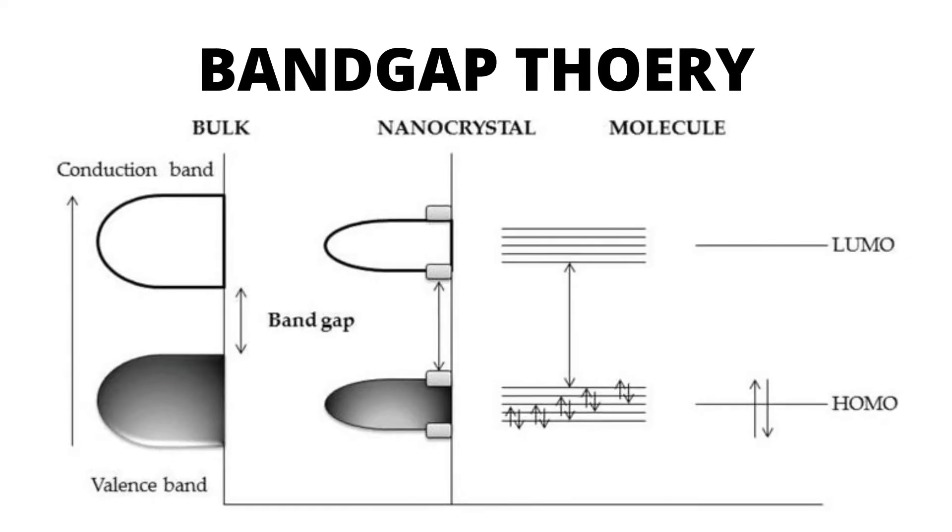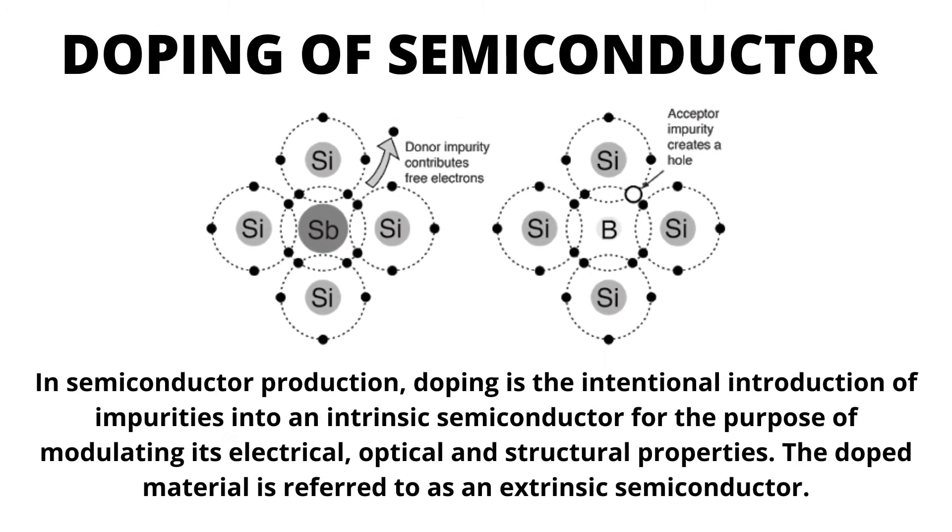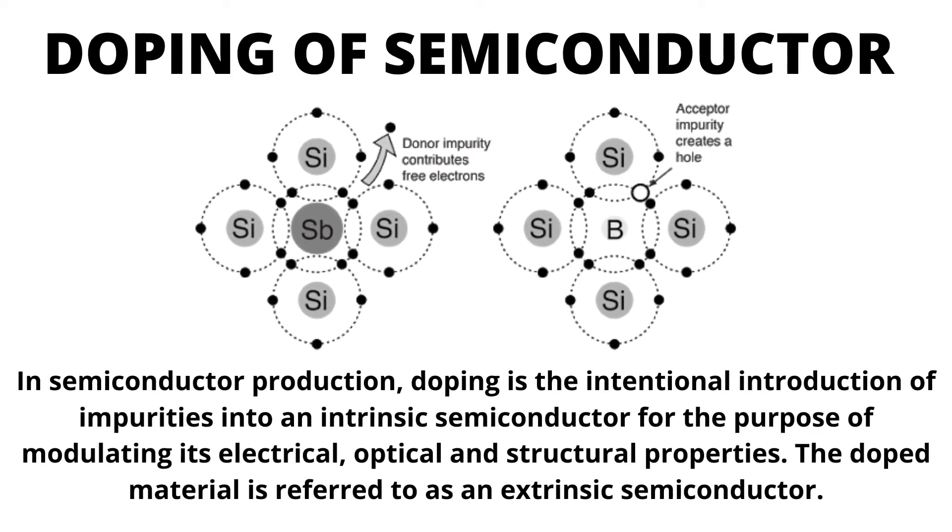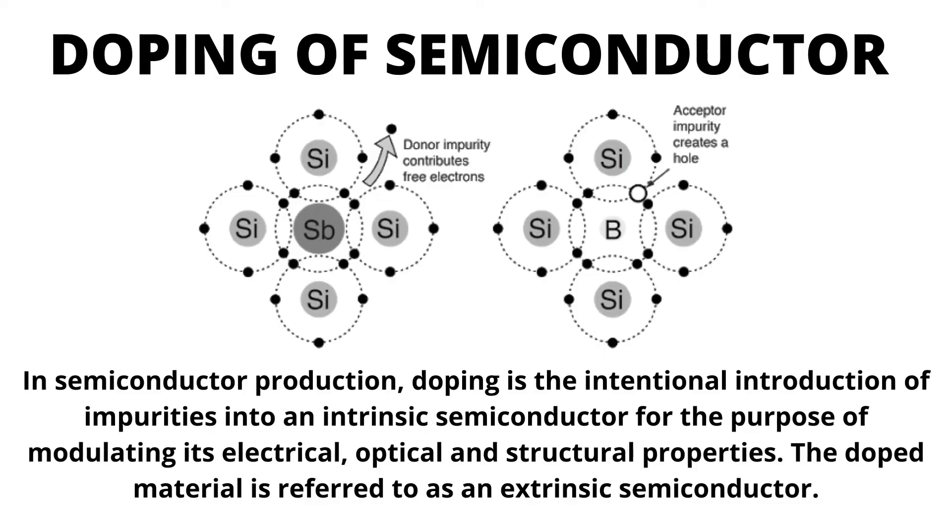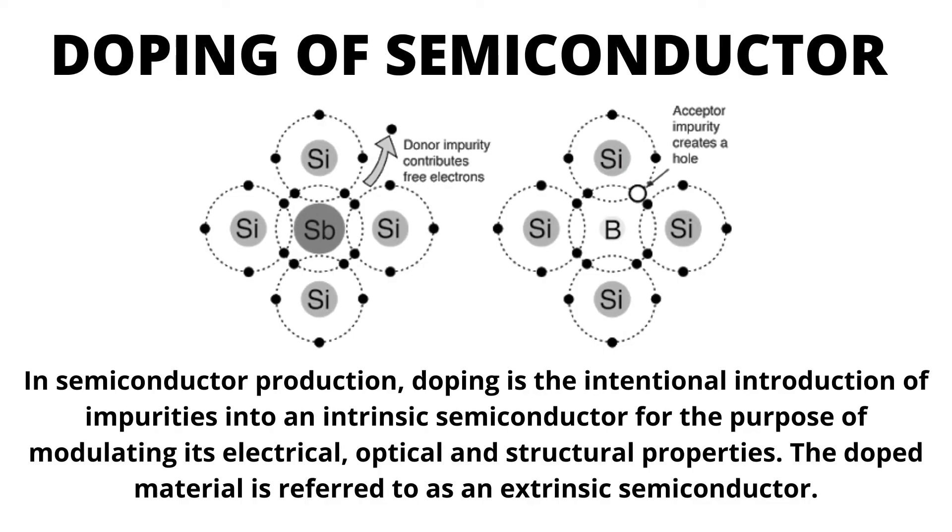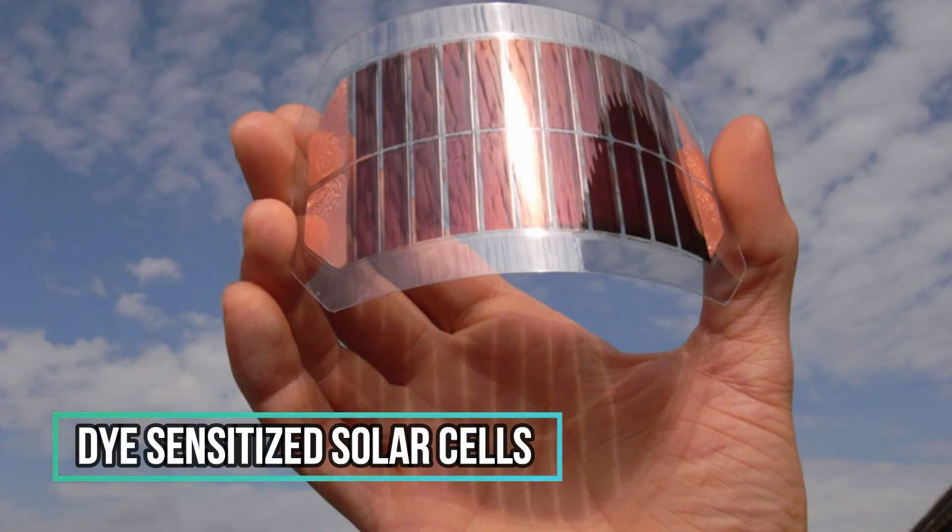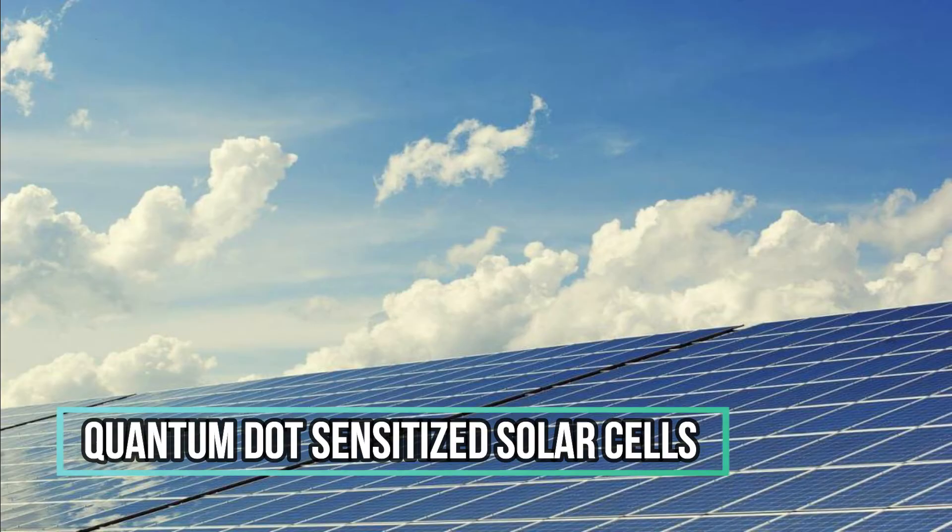However, this phenomenon can be finely tuned by doping other atoms in a nanomaterial or by controlling its size and shape, called its morphology. This allows the band gap to be controlled and influenced as per the need of any particular application. This strategy is frequently used in the design of modern types of solar cells, such as dye-sensitized solar cells and quantum dot-sensitized solar cells, among others.